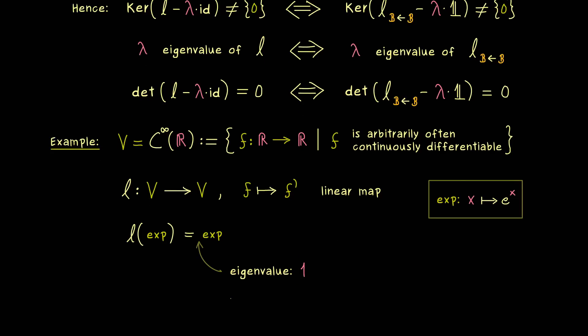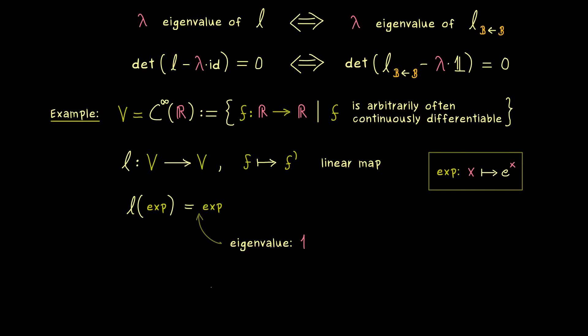So you see, even in this abstract setting of functions we have something we can call eigenvectors and eigenvalues. And there I should tell you that sometimes people call this eigenvector eigenfunction simply because we work in the space of functions.